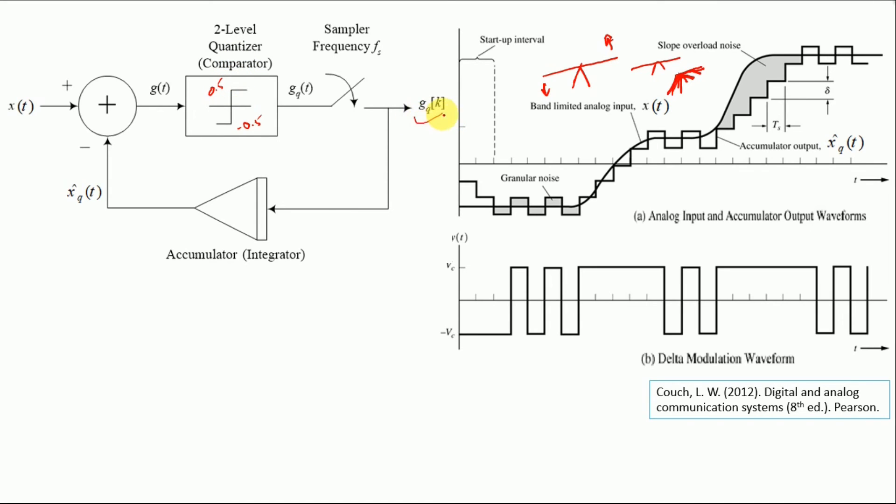Now this waveform is represented over here. So you can observe that if the accumulator output is going downward, so we would have minus Vc minus Vc, where this minus Vc is simply minus 0.05 previously mentioned.